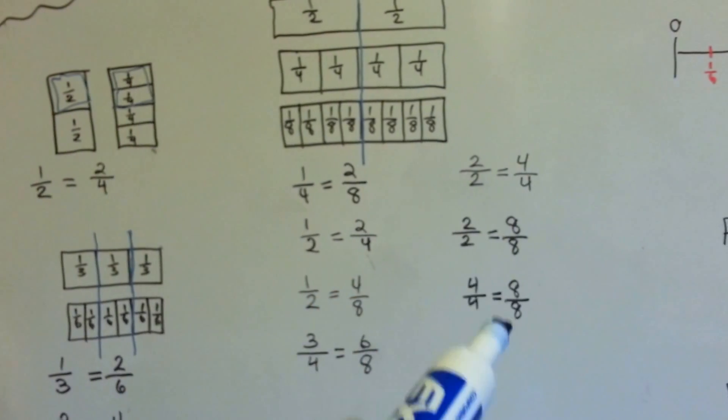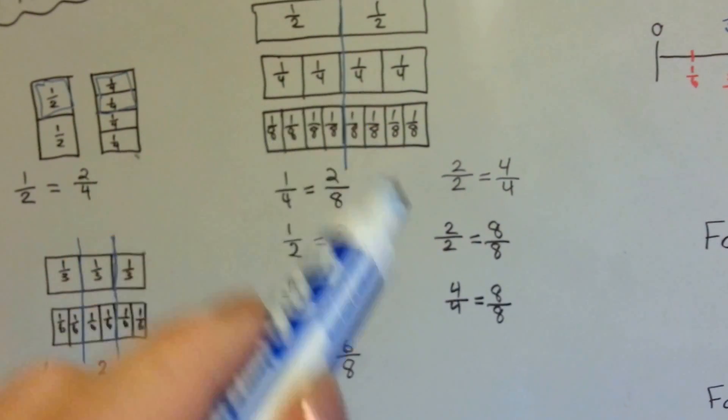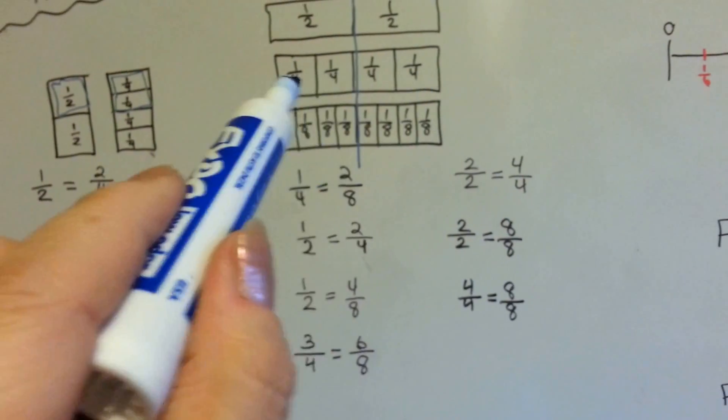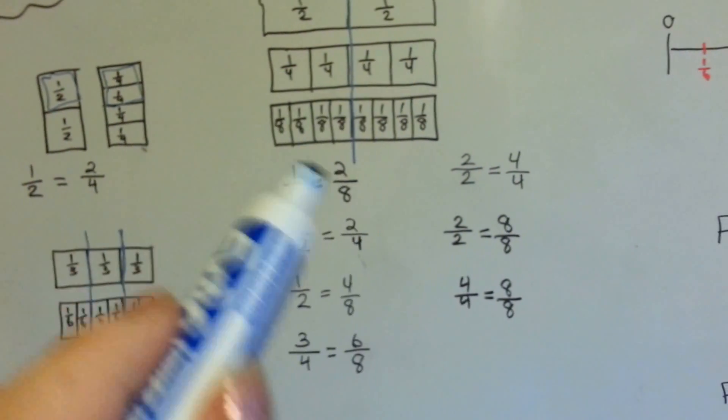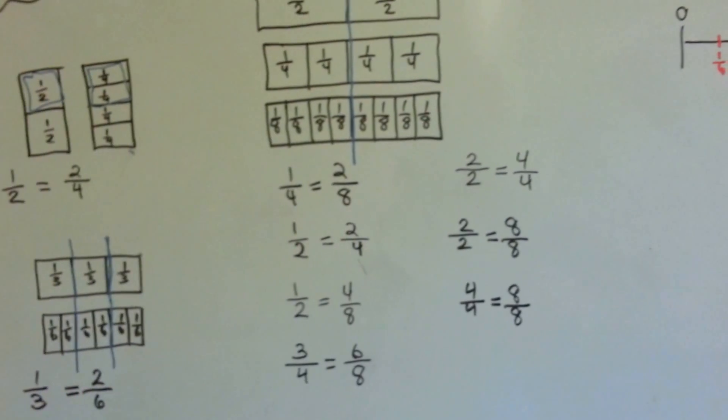When the numerator and the denominator are the same, it means it equals one whole. Four eighths, I mean four fourths, all of these fourths, are equal to eight eighths. All of these eighths. It equals one.